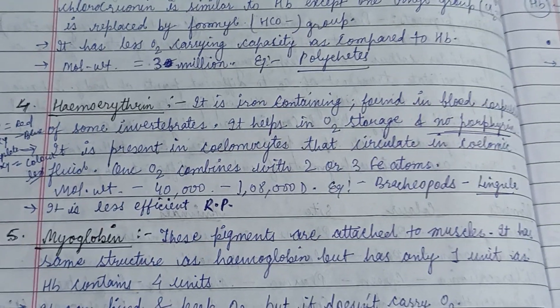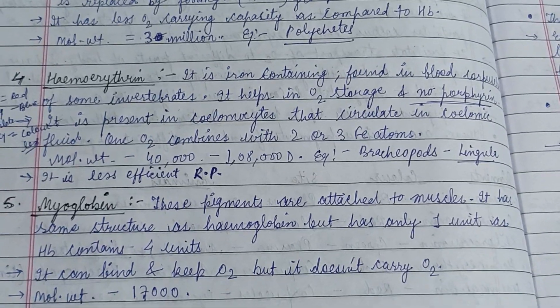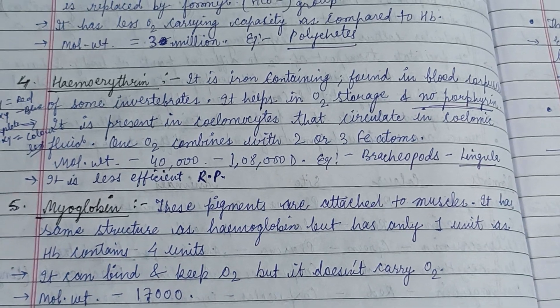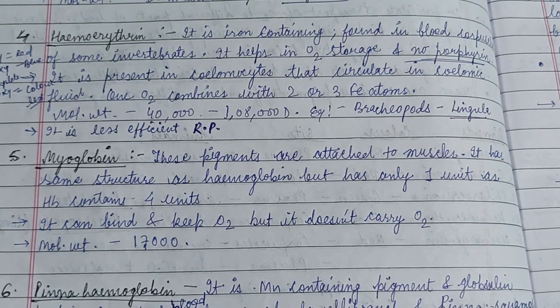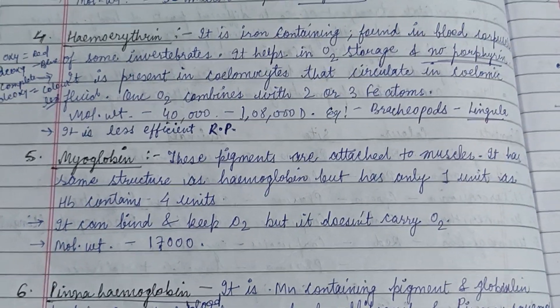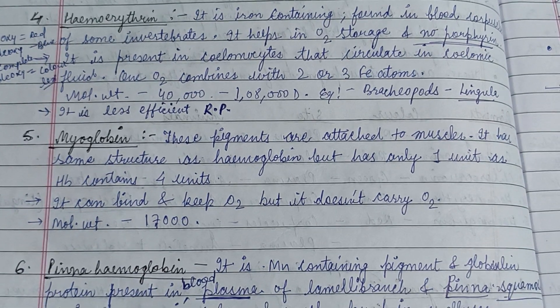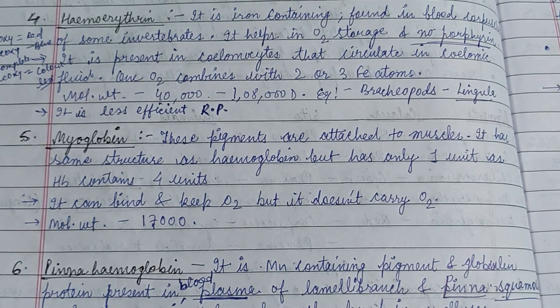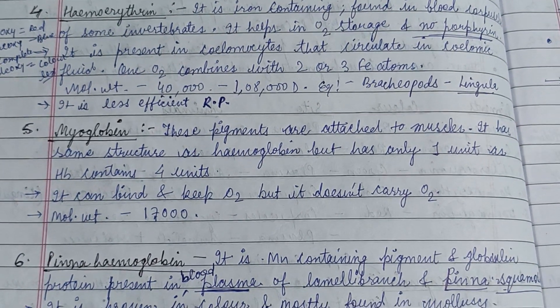Chlorocruorin is also an iron-containing pigment, similar to hemoglobin, except one vinyl group is replaced by a formyl group. It has less oxygen-carrying capacity compared to hemoglobin. Hemerythrin is iron-containing and found in the blood capsules of some worm body walls.